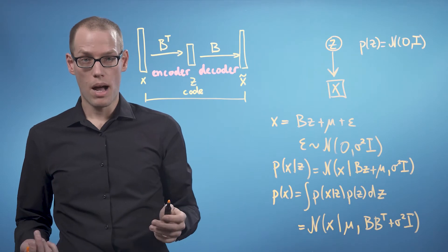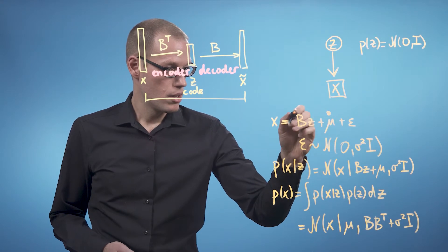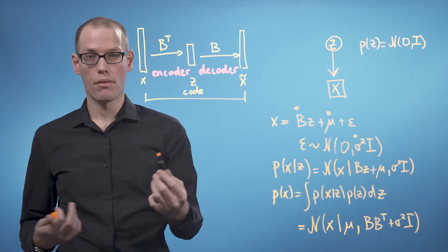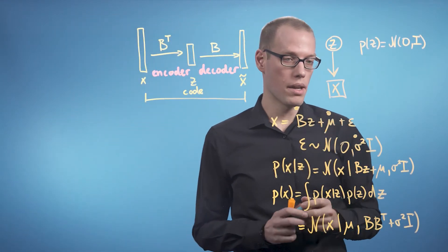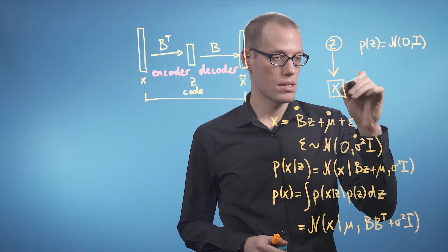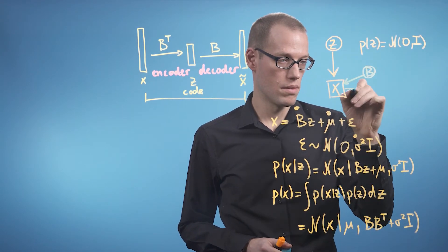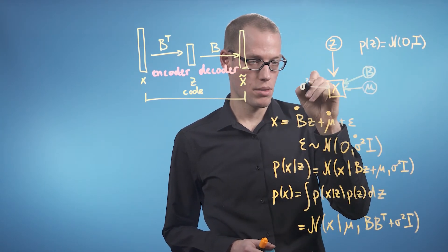The parameters of this model are mu, B, and sigma squared. And we can write them explicitly down in our model. So model parameters are B and mu and sigma squared.